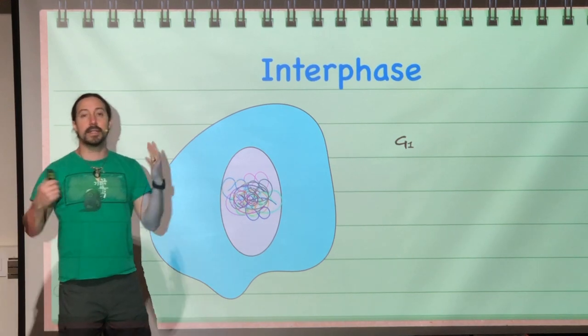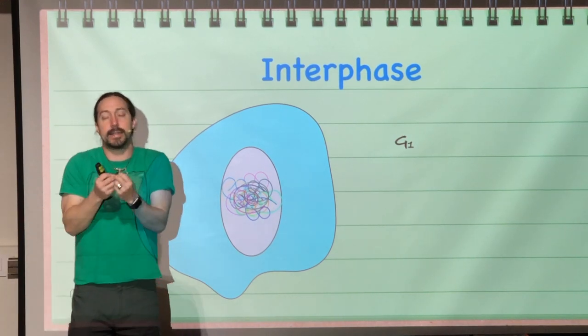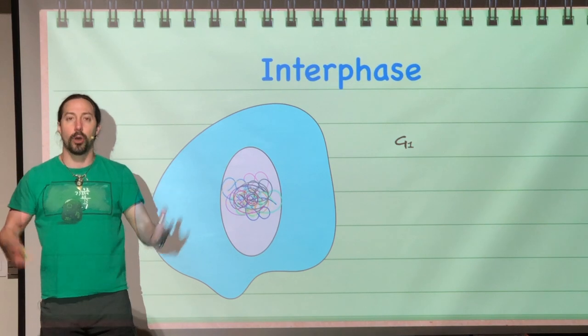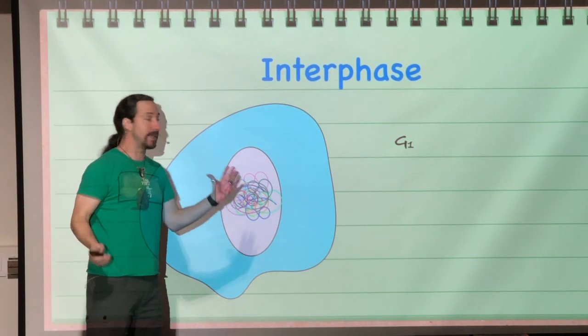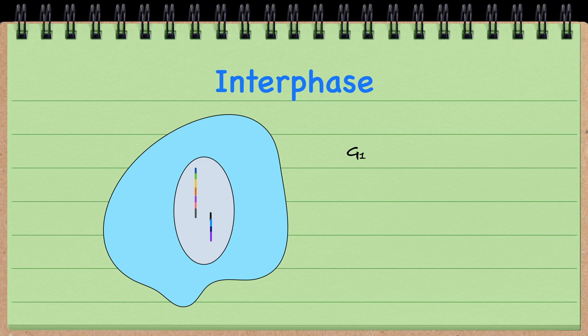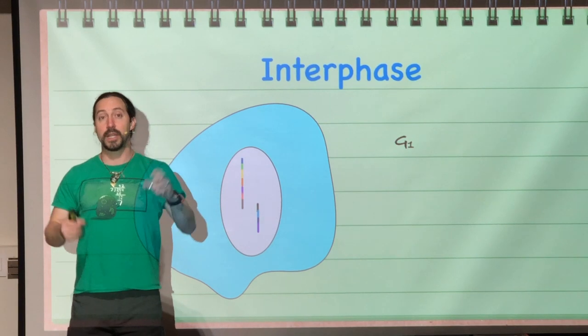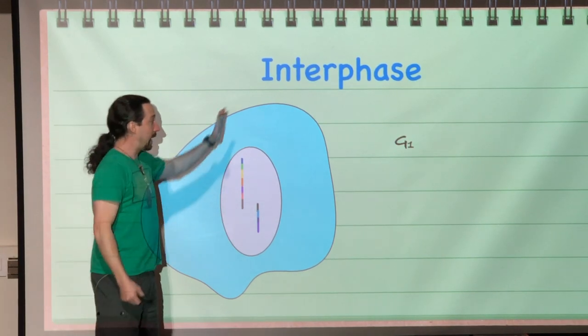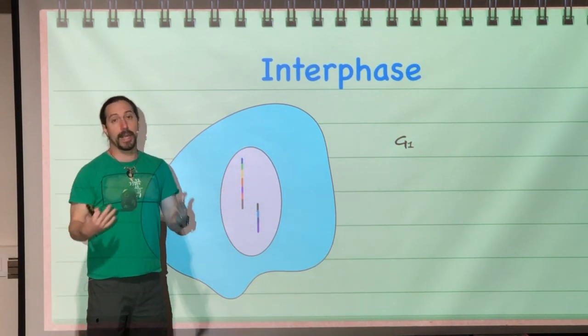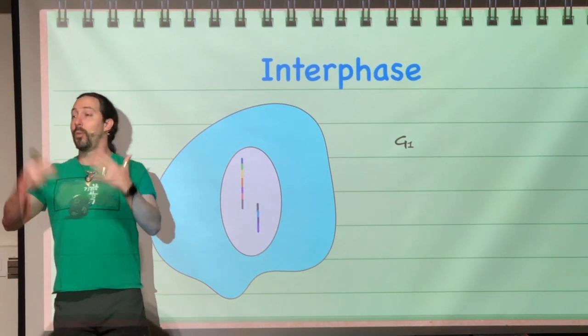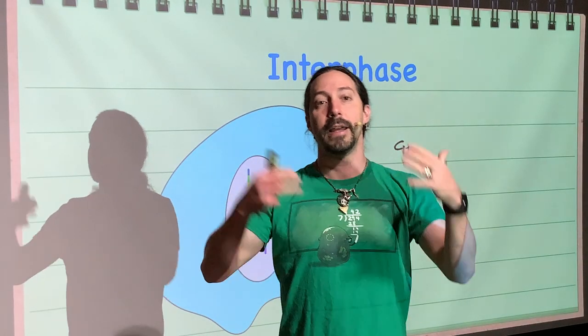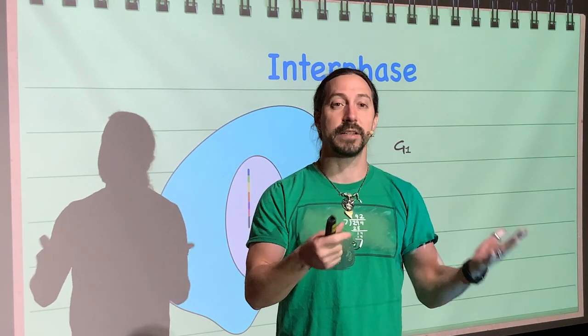During G1, the DNA exists in that decondensed state that we call chromatin. If it were to condense at this stage, it would appear as two unreplicated chromosomes. So this cell has two chromosomes, each of which in Gap 1 have not replicated yet, because we haven't gone through the process of DNA replication, which takes place during the S phase or the synthesis phase.